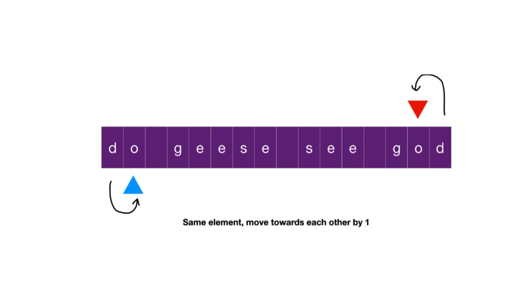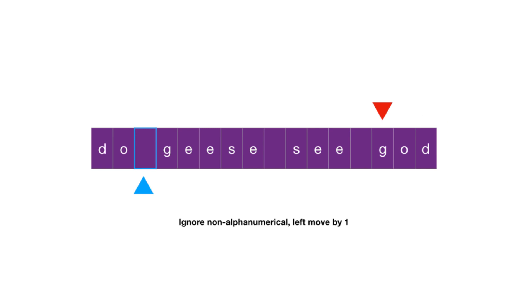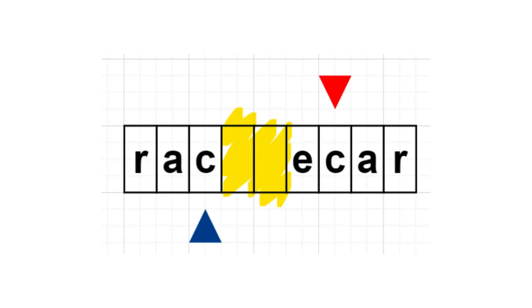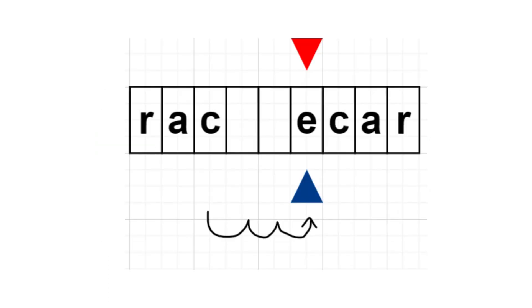While L is less than R, we let two pointers move toward each other. At each step, it is important to know that we are ignoring all non-alphanumeric characters. We skip it by incrementing one position only for the corresponding pointer. When there are multiple non-alphanumeric characters in a row, we want to make sure to skip all of them.